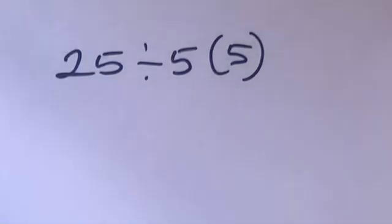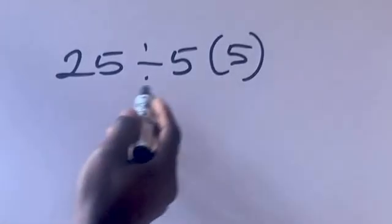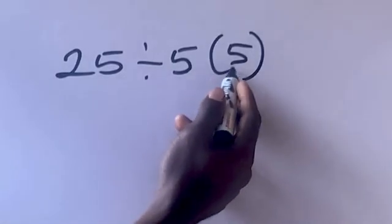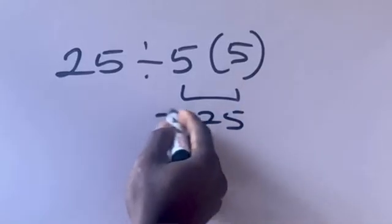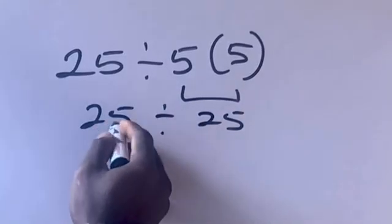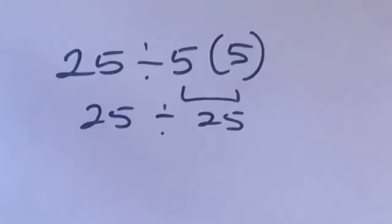Hi guys, please pay attention. As simple as this math problem is, many people have failed. So let's see: 5(5) gives us 25, divided 25 divided by 25, we give us what? One. But this answer is not correct.